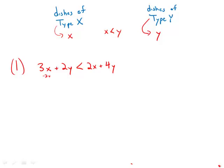Subtracting 2x from both sides leaves us with x + 2y < 4y. Then subtracting 2y from both sides gives us x < 2y.